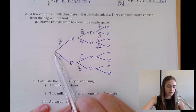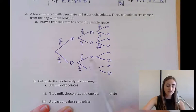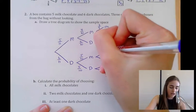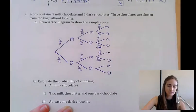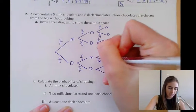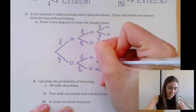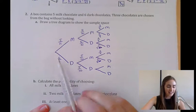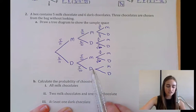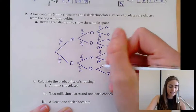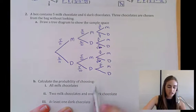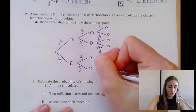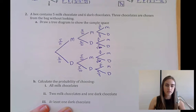If we've chosen two dark chocolates, there are still 5 milk chocolates left but only 4 dark chocolates, out of 9 total. Now we have all our probabilities filled in, though it's gotten a bit messy. Rather than calculating every branch, we'll just compute the ones we need.